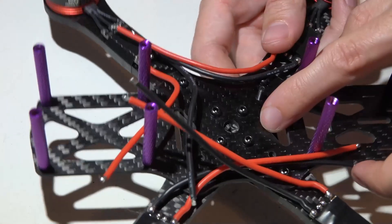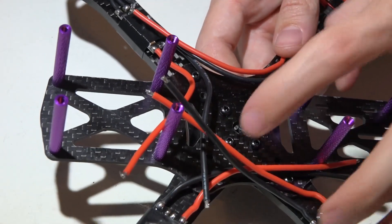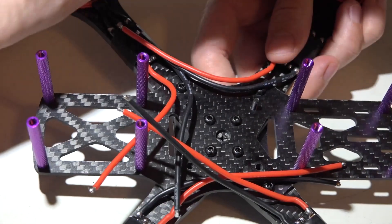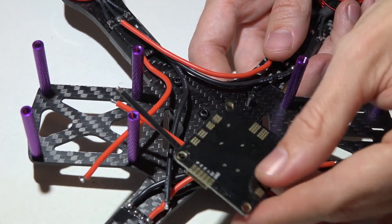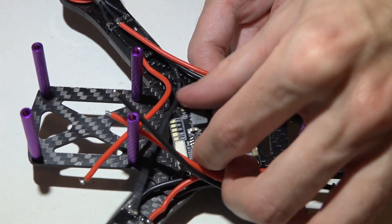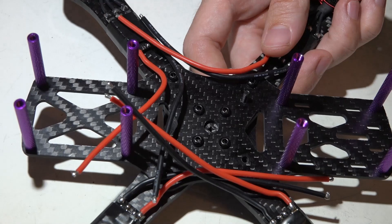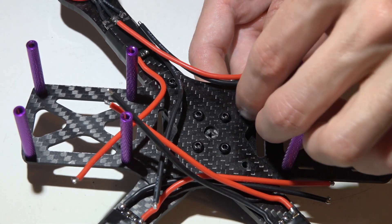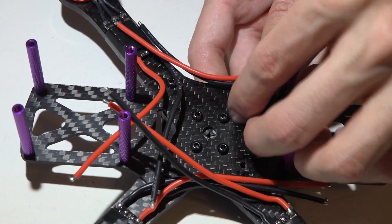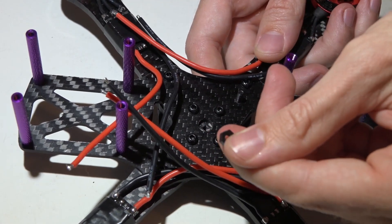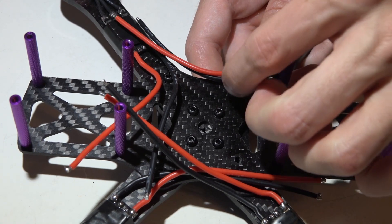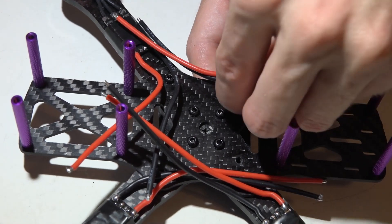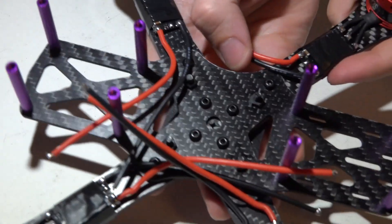Then if I were to mount the PDB right on top of this, it's not going to fit flush. Because you know, like I was saying, I like to mount my PDBs right on top of the frame. That's not going to work in this case because of these bolts being in the way. So we need to bring it up a little bit. But instead of using a full standoff, I'm just going to use one of these little M3 nylon nuts. And that's going to give me enough distance just to get off of these bolts.